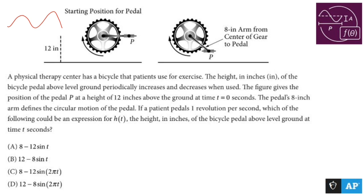So I'm going to attempt to draw a picture. The pedal's 8-inch arm defines the circular motion of the pedal. If the patient pedals one revolution per second, which of the following could be an expression for h of t, height in inches of the bike pedal above level ground at time equals t? Let's try to draw a picture.